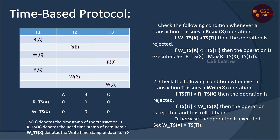Here, T1's timestamp is 10, T2's timestamp is 20, and T3's timestamp is 30. We will now execute the transactions using the timestamp ordering protocol.